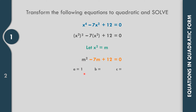A = 1, B = -7, and C = 12. We need to find factors whose sum is -7 and whose product is 12. If we try 6 × 2, the product is 12, but the sum is 8, so that is incorrect.